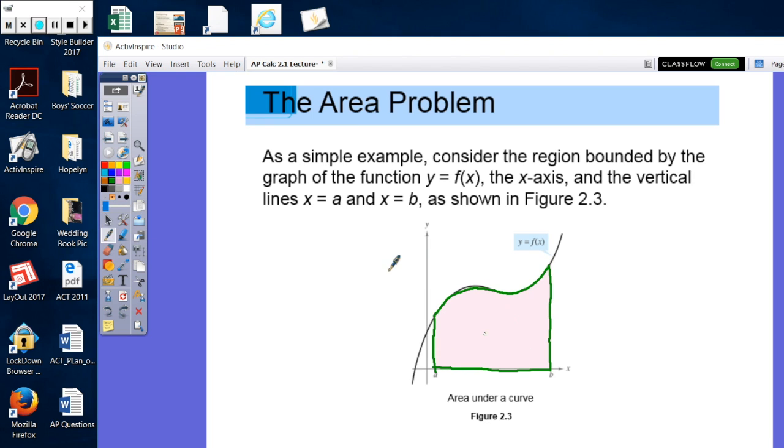So here's our little graph and as you can see, the area we're talking about is this pink area that's underneath our graph y equals f of x, the x-axis, and the line x equal to a and x equal to b. So therefore it's bounded by all those and it's that area underneath. Now unfortunately, we do not know a formula that will give us that area.